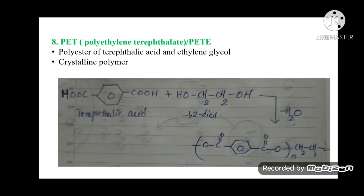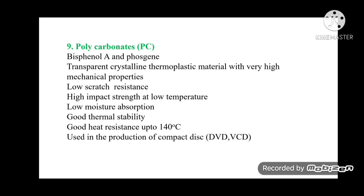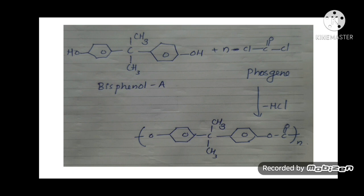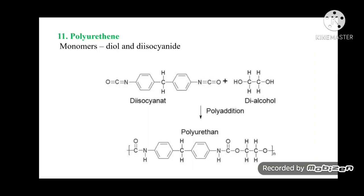PET (Polyethylene terephthalate) is a polyester of phthalic acid and ethylene glycol, and is a crystalline polymer. Polycarbonates (PC): monomers are bisphenol and phosgene. It is a transparent, crystalline thermoplastic material with high mechanical properties, low scratch resistance, high impact strength at low temperature, low moisture absorption, good thermal stability, and heat resistance up to 140°C. It is used in production of compact discs like DVDs and VCDs. Polyurethanes: monomers are diol and diisocyanate.